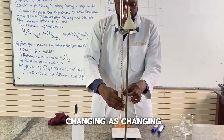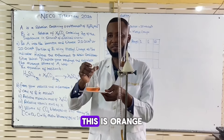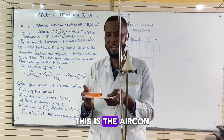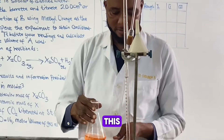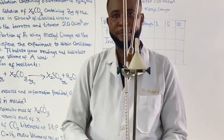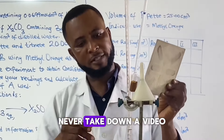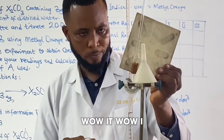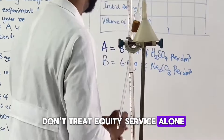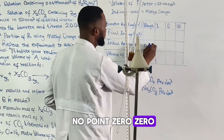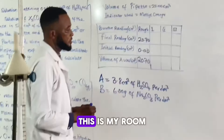It's changing! As it's changing, I keep adding drops. This is orange — it's at the endpoint. That's changed. The acid has neutralized the base. Let me take down the reading. I found the final reading is 20.70. I started from 0.00. So it's 20.70 cm³. This is my rough run.